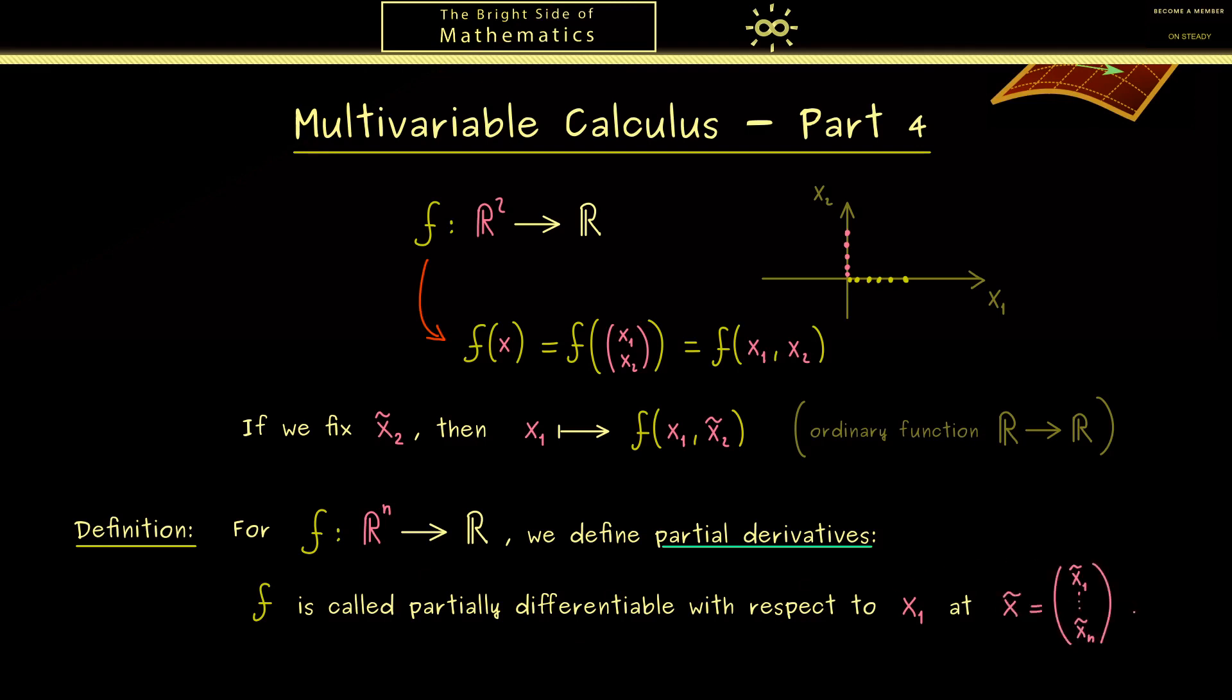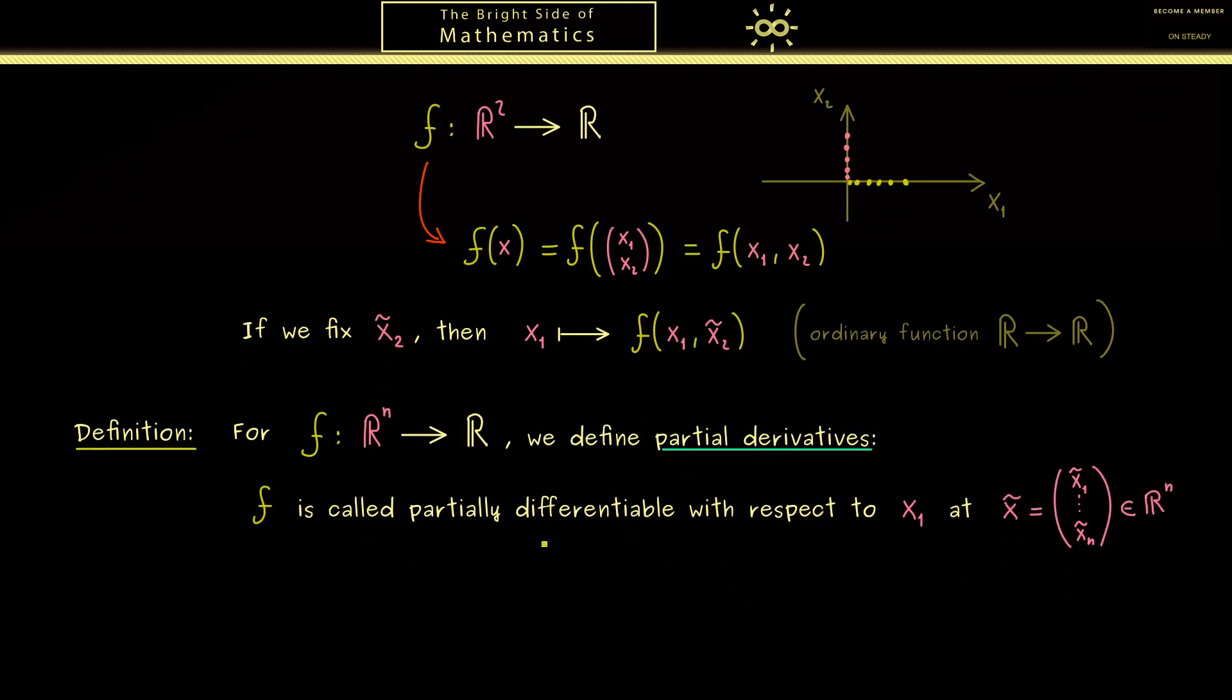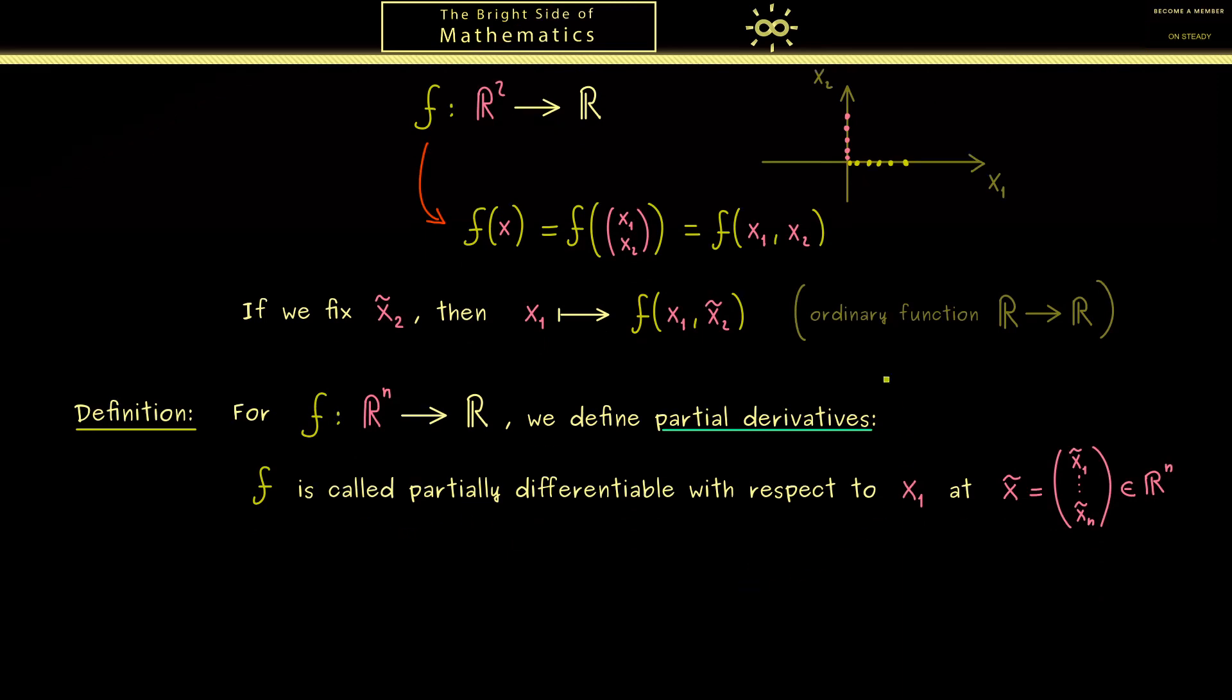So you know we have a vector with n components. And maybe you might already know how the definition should look like. It should simply be the differential quotient of this ordinary one-dimensional function. This means we look at the difference of f at x̃₁ plus h minus f of x̃₁. And of course we know all the other variables should be fixed. Hence there is no h involved there. Okay, so we have this difference here, the difference in the value. And then as usual we have to divide this by the difference of the input, which of course is simply h.